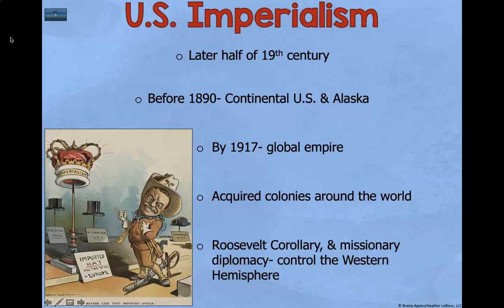Before 1890, it was just the continental US and Alaska. However, by 1917, the United States starts to become this global empire where they start to get involved in other countries. They start to acquire colonies around the world. We also see the Roosevelt Corollary, missionary diplomacy, and control of the Western Hemisphere. Roosevelt is kind of the main figure we think of when we look at US imperialism.